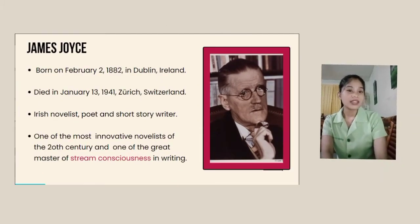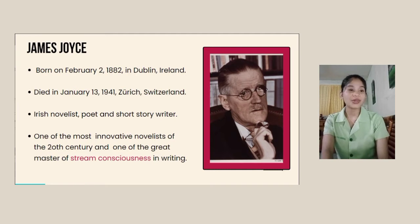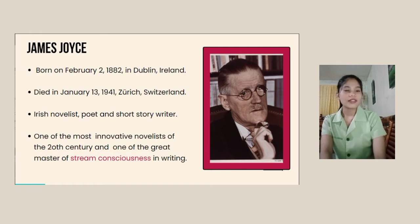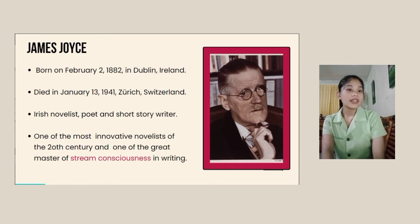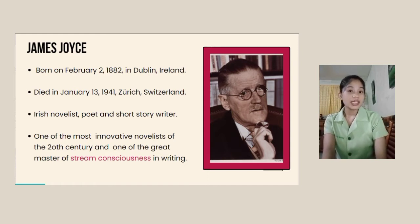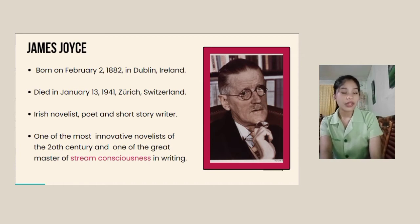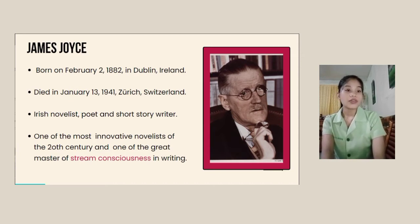James Augustine Aloysius Joyce was born on February 2, 1882 in Dublin, Ireland into a Catholic middle-class family. He was an Irish novelist, poet, and short story writer. He is known for his experimental use of language and exploration of new literary methods, including interior monologue, use of complex networks of symbolic parallels, and invented puns, words, and allusions in his novels, especially in Ulysses. His eyesight quickly diminished in 1923, and he died on January 13, 1941 in Zurich, Switzerland.